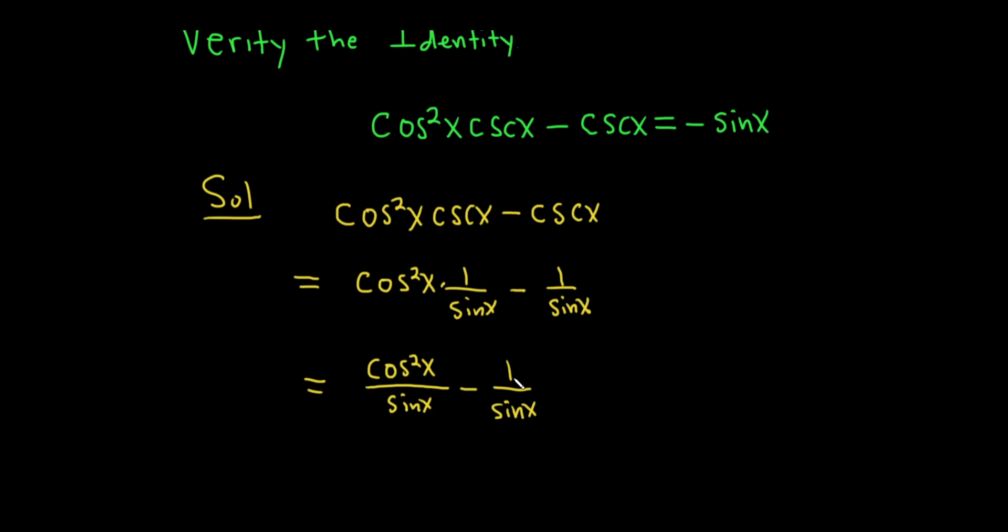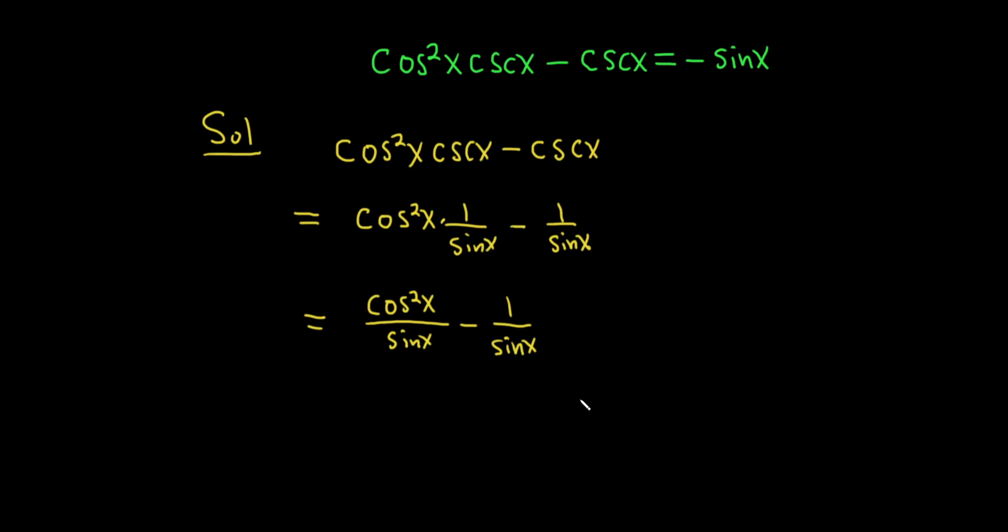And now notice that we have the same denominator, so we can write everything over that denominator. So we can write this as cosine squared x minus 1 over sine x.